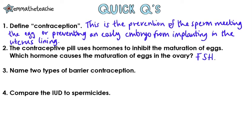Question 3: Name two types of barrier contraception. Condoms and diaphragms.